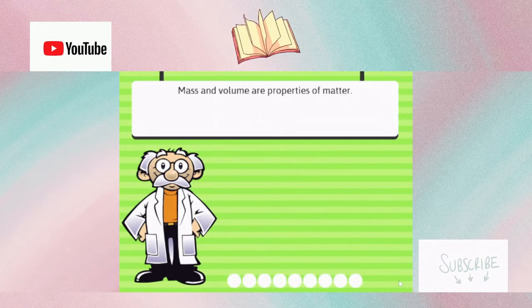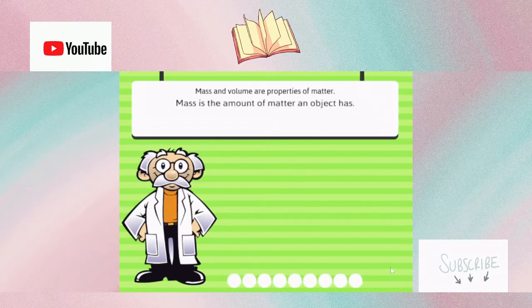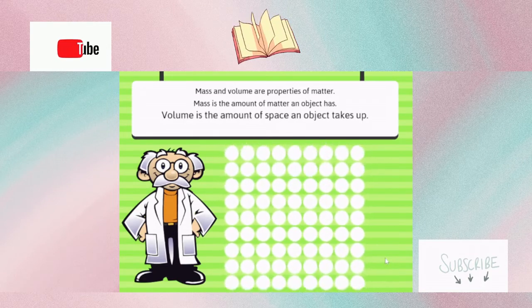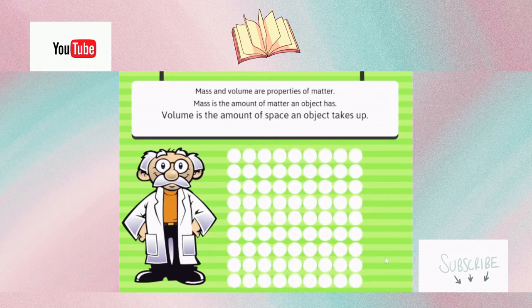Mass and volume are properties of matter. Mass is the amount of matter an object has. Volume is the amount of space an object takes up.